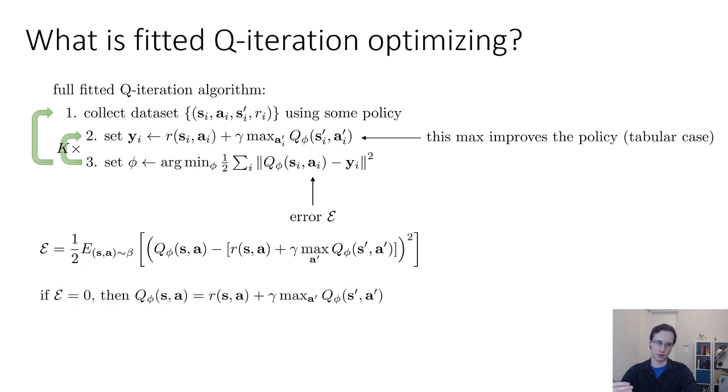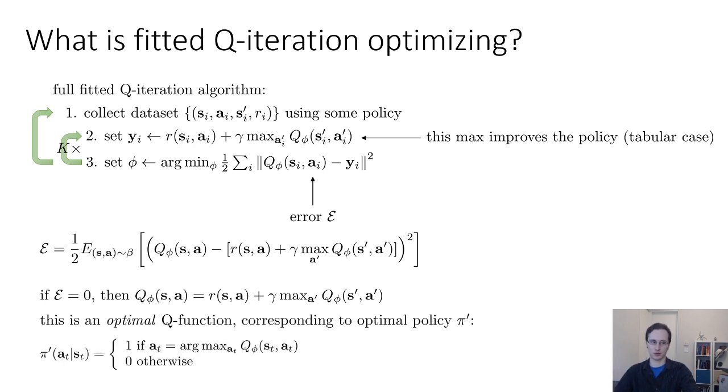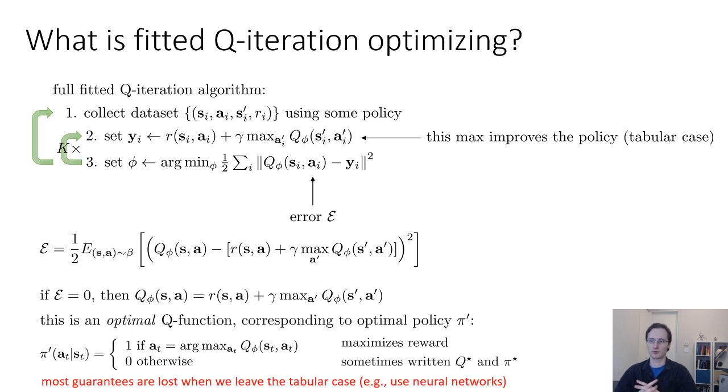If the error is zero, then you know that Q phi s a is equal to r(s,a) plus gamma max over a prime Q phi s prime a prime. And this is an optimal Q function corresponding to the optimal policy pi prime, where the policy is recovered by the argmax rule. So this you can show maximizes reward, but if the error is not zero, then you can't really say much about the performance of this policy. So what we know about fitted Q iteration is in the tabular case, your error will be zero, which means that you will recover Q star. If your error is not zero, then most guarantees are lost when we leave the tabular case.